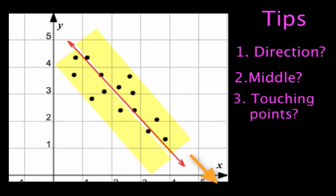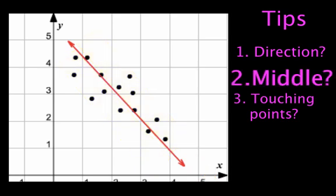And if possible, get the line to touch as many dots as possible. Now you might have a line of best fit that does not touch any dots and that's perfectly okay, because the first priority is to get it in the middle of all the dots, because you're thinking of a line of best fit as the average line.